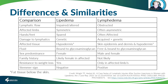Most lipedema appears to be genetic, and most lymphedema is acquired, though there are some primary genetic causes. Lipedema just affects the subcutaneous tissue, whereas the whole skin is involved in lymphedema. In lipedema there's excess fluid bound to glycosaminoglycans, which are sugars, and in lymphedema there's also bound fluid but there is also free fluid that sits in the affected limbs.